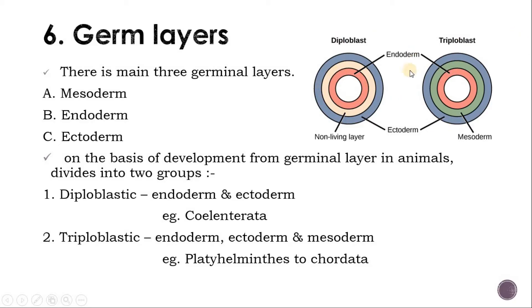Here we can picture these things. The diploblastic animal originates and develops from two germinal layers. The innermost layer is endoderm and the outermost layer is ectoderm. The middle layer, mesoderm, is not found in these types of animals — there are only cells and fluid filling that region. There is no true middle layer, so the animal is called a diploblastic animal.